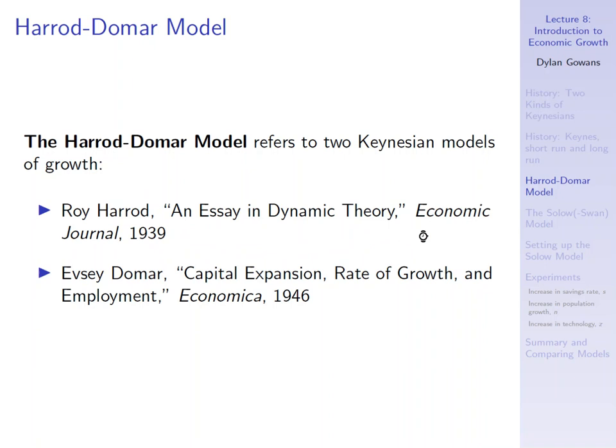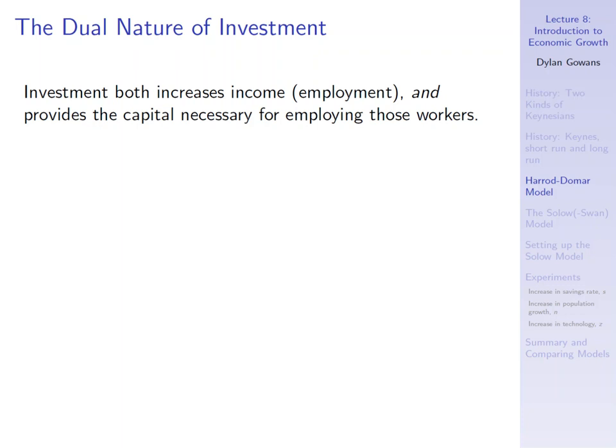Here's the other thing that linked these two models. First was they had this Keynesian view of what causes the growth in output. And the other is they both noticed that investment has this dual nature. First, what we already talked about: investment increases income. So changes in investment or growth in investment is what leads to growth in income and output and also employment.